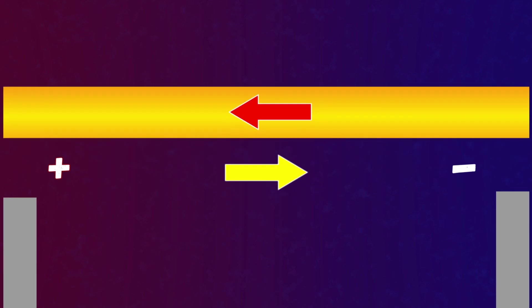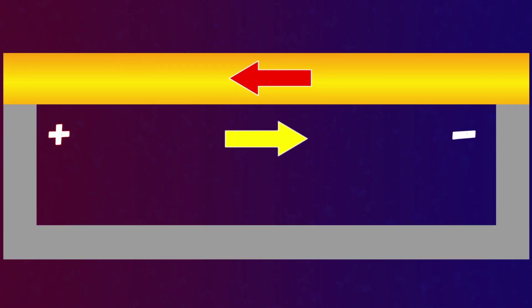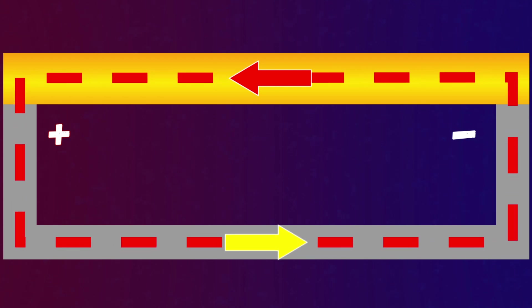However, if we now connect the ends of our conductor to another conductor in which electrons are uniformly distributed, then for this conductor, this potential difference will already be external, and a current will flow through it.